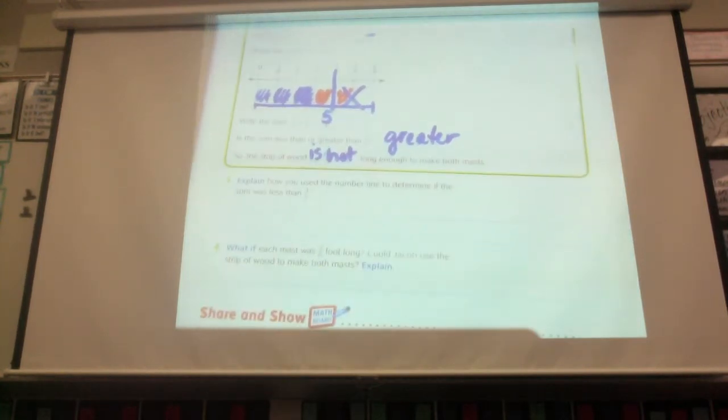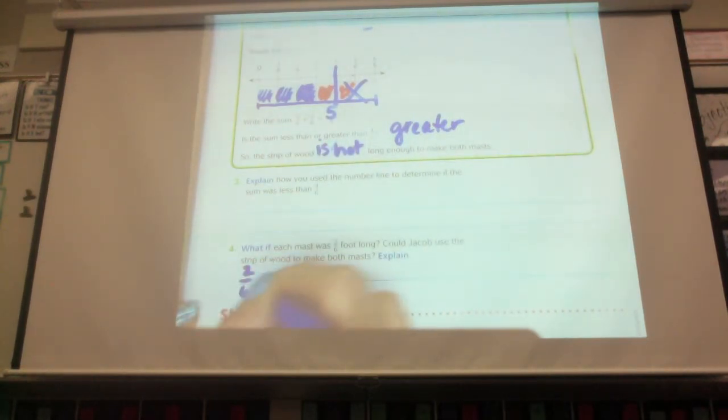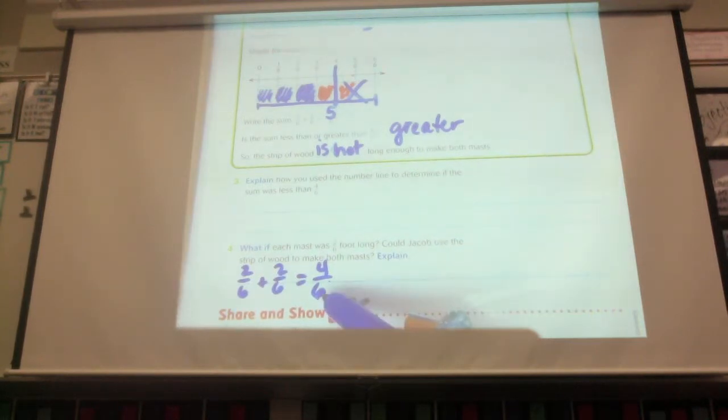What if each of the masts was two-sixths of a foot long? Could Jacob use the strip of wood to make both masts? So let's go ahead and just add them using this method without the model. He has two-sixths for the first one. How much is the second one now? Two-sixths. Right, both of them are two-sixths. If I add those, what do I get? Four-sixths. There we are. How much wood does he have? Four-sixths. How much does he need? Four-sixths. Does he have enough? Yes, he does, and that's why.